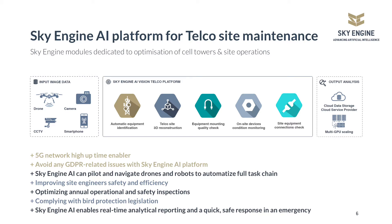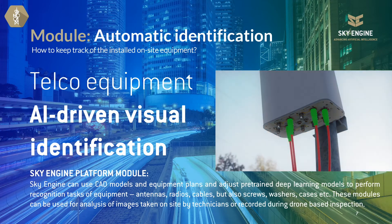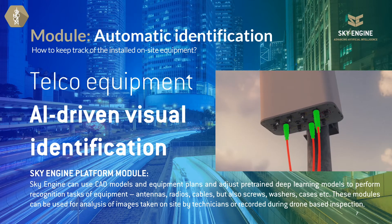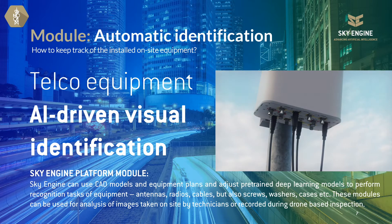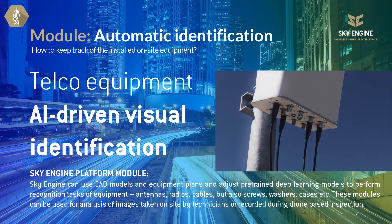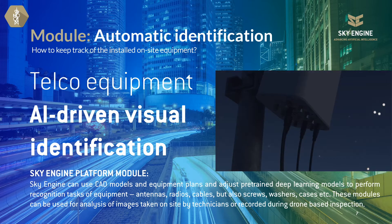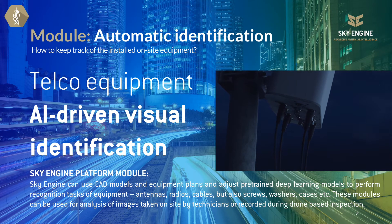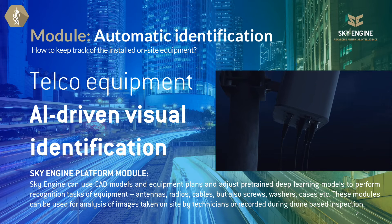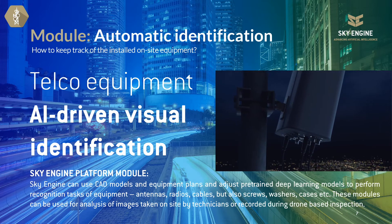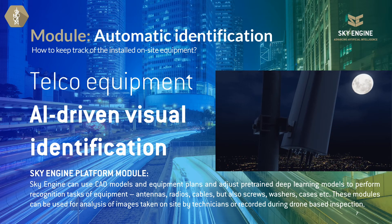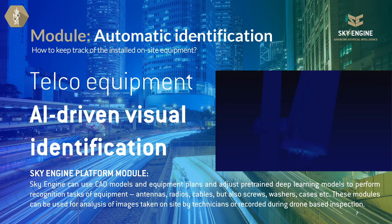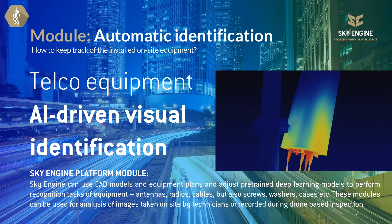Let's have a detailed look into SkyEngine's telco platform modules. The first module was designed for automatic identification, addressing the relatively simple problem of tracking installed on-site equipment. SkyEngine can use CAD models and equipment plans and adjust pre-trained deep learning models to perform recognition tasks of equipment, antennas, radios, cables, but also screws, washers, or cases. These modules can be used for analysis of images taken on-site by technicians or recorded during drone-based inspection.